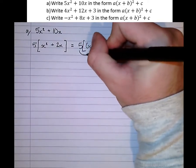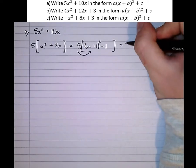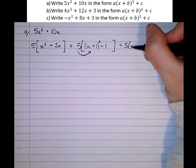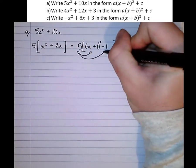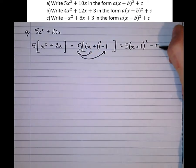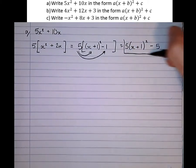Almost done now. Then we're going to multiply out these square brackets. 5, x plus 1, squared, minus 5. And there's our answer.